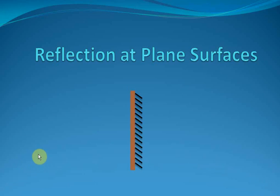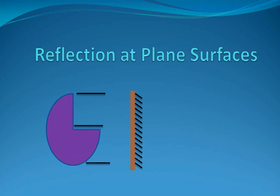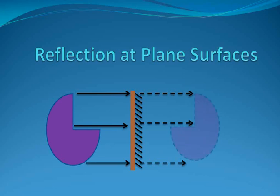How does this reflection take place? What will happen if you tilt the mirror you have in front of your eyes? What will happen if you have two mirrors in front of your eyes and you look at both of them at the same time? We are going to study a lot of interesting phenomena in this chapter, reflection at plane surfaces. So let's begin.